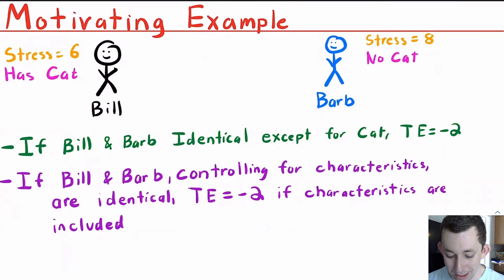So Bill's Y1 would be 6. His Y0, his proxy for his Y0, is Barb's outcome, which is 8. So we would say that treatment effect is minus 2. And our best guess for Barb's Y1 is Bill's Y1, which is 6. We would say 6 minus 8 for Barb as well. And so Barb's treatment effect would be minus 2.